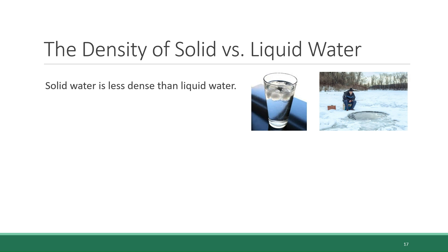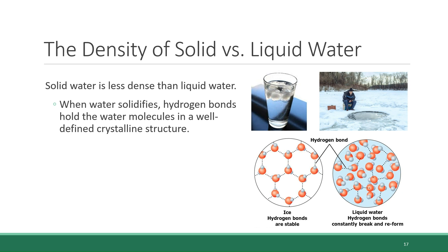This is because when water solidifies, the hydrogen bonds hold the water molecules in a well-defined crystalline structure, which you can see on the bottom left. The hydrogen bonds hold the molecules at a certain distance from each other. And as a result, the structure of solid water is more open and less dense than liquid water, which you can see illustrated in the circle on the right.